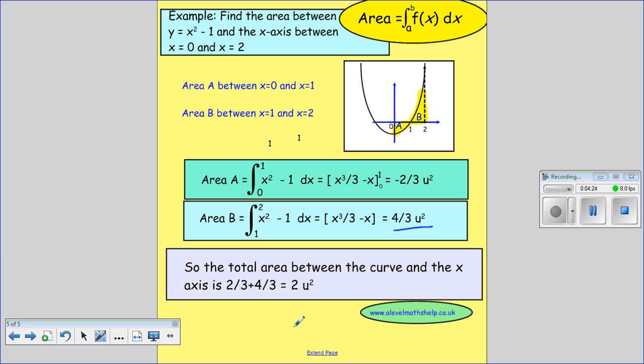So the total area between the curve and the x-axis between our lines x equals zero and x equals two will be the sum of these two when we ignore the negative sign. So we'll get two thirds plus four thirds, which gives you six thirds, which gives you two units squared.